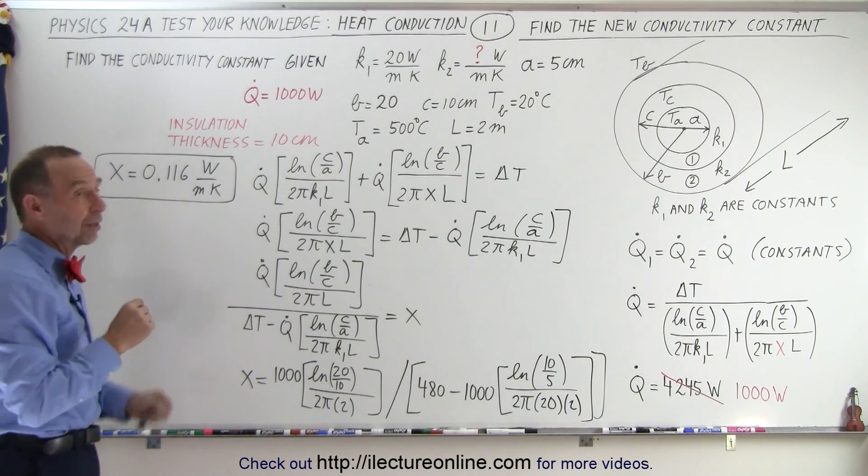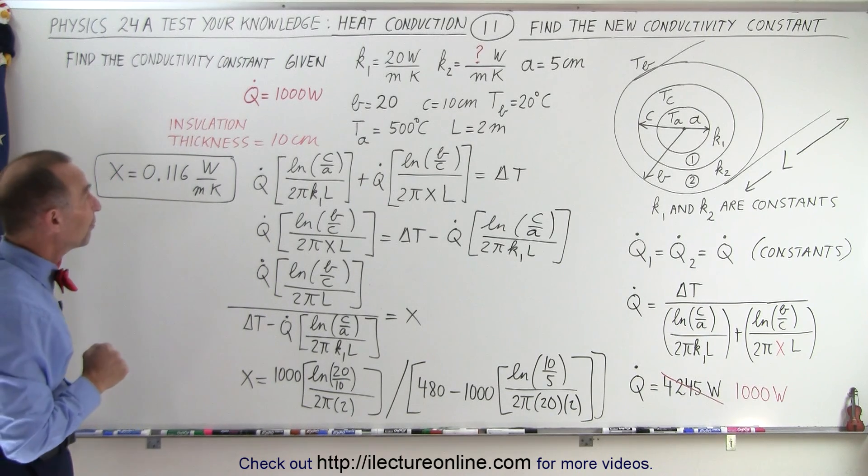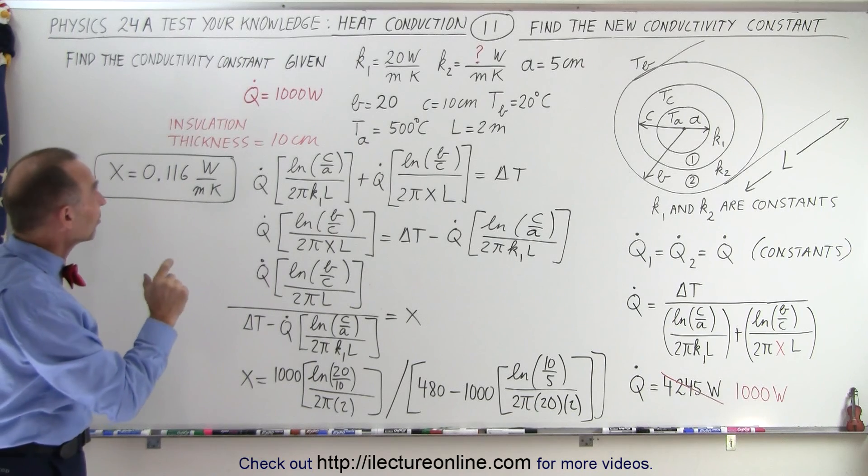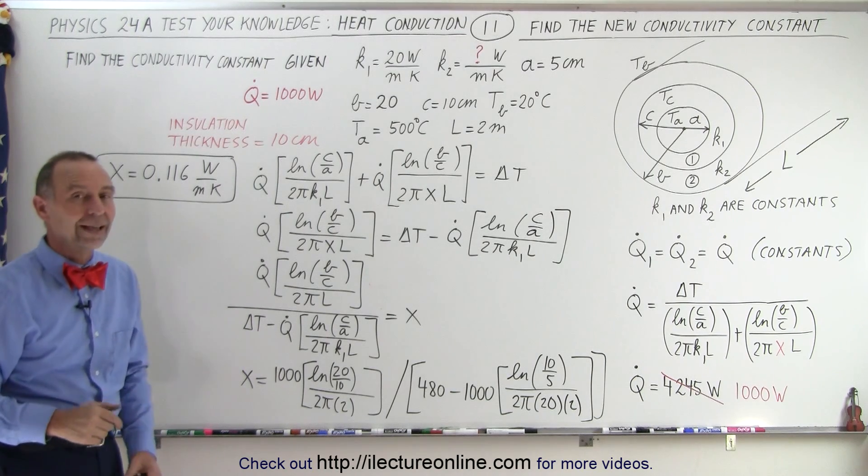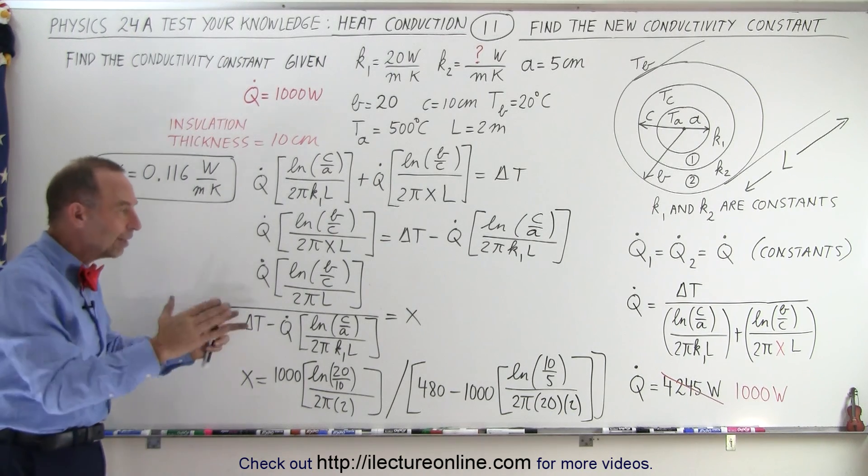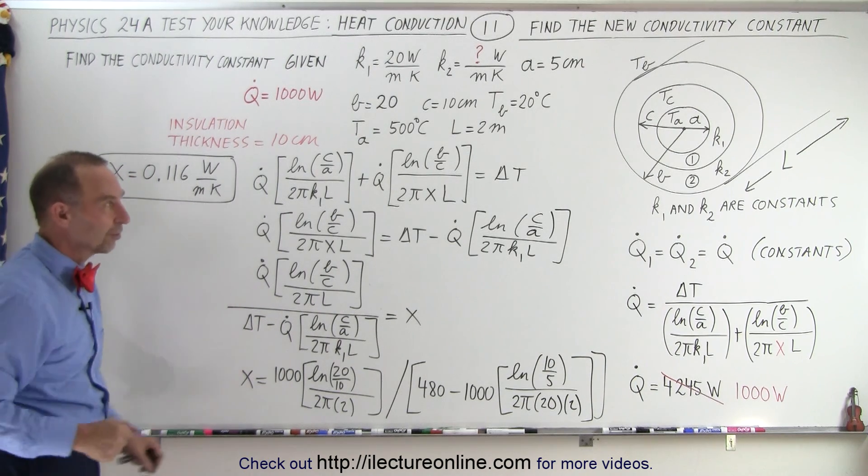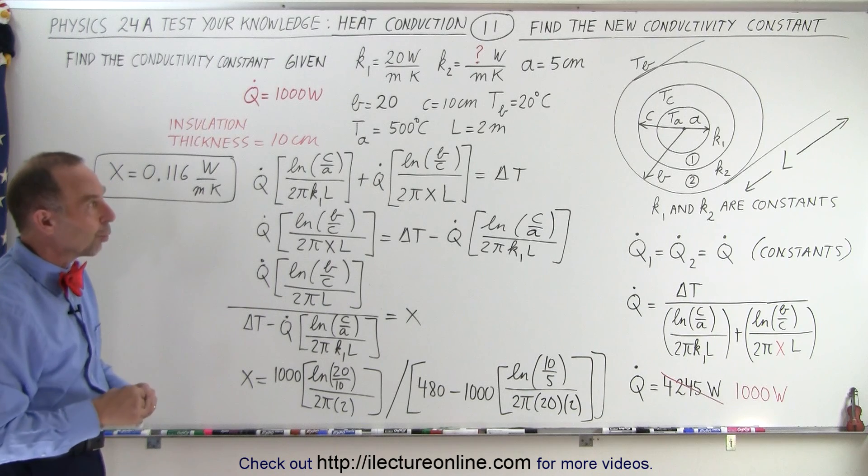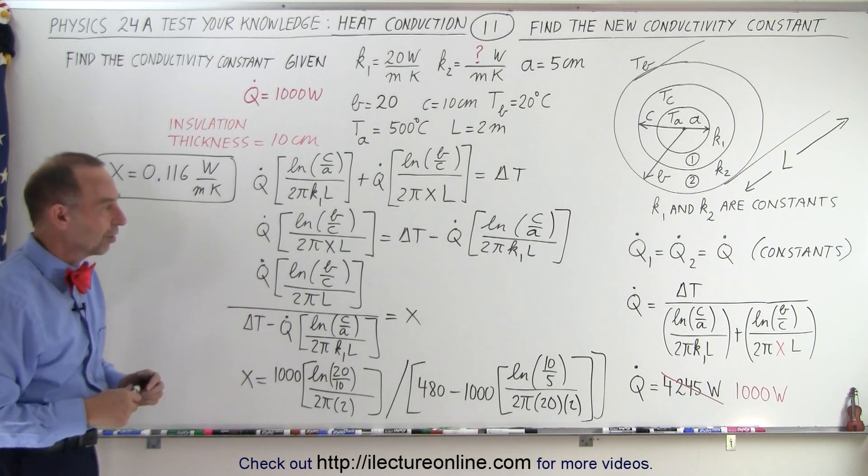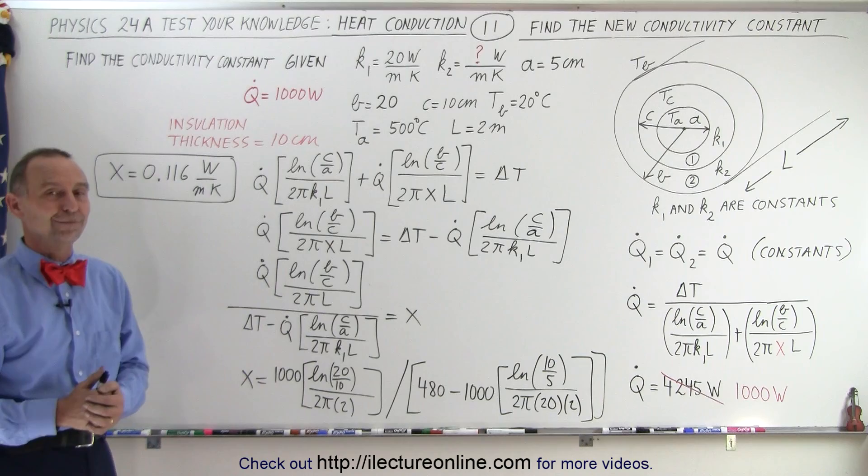we can keep the insulation thickness to 10 centimeters, and that will then keep the heat loss to 1,000 watts, 1,000 joules per second, across that cylinder wall, with the length of the cylinder being 2 meters long. And that is how it's done.